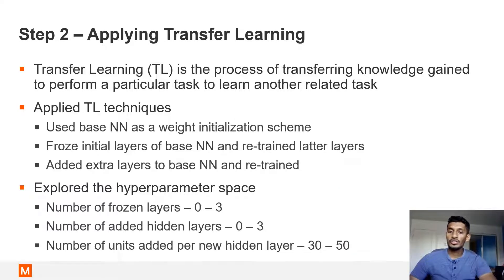Step 2 of our project was to tune the base neural network developed in step 1 via transfer learning to predict stresses from accelerations on the same bike geometry, but with different physical properties. We applied three different transfer learning techniques: one, used the base neural network as a weight initialization scheme; two, froze initial layers; and three, added extra layers.